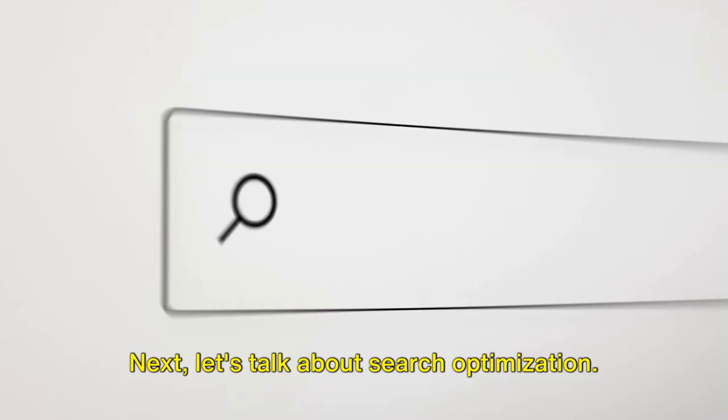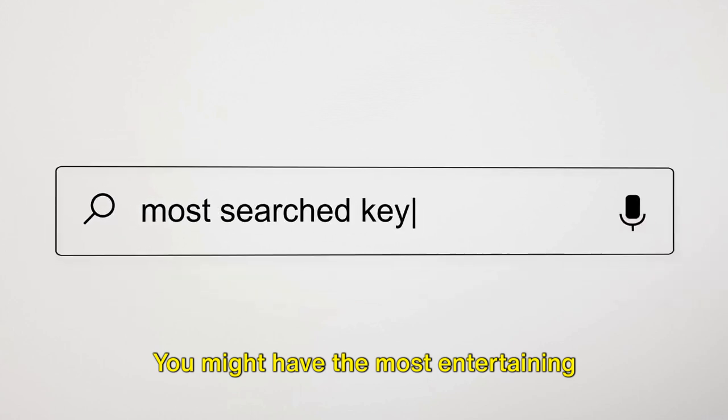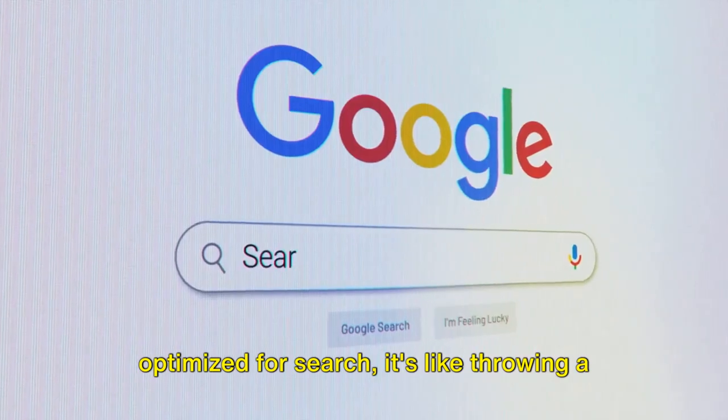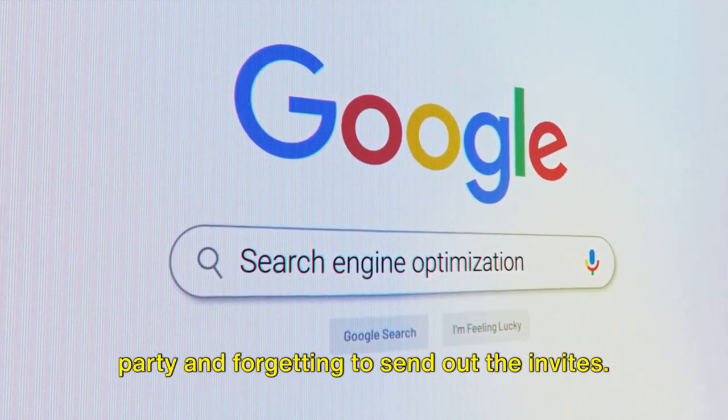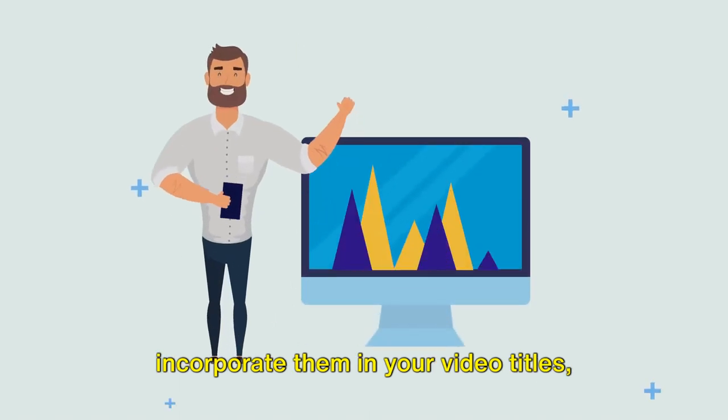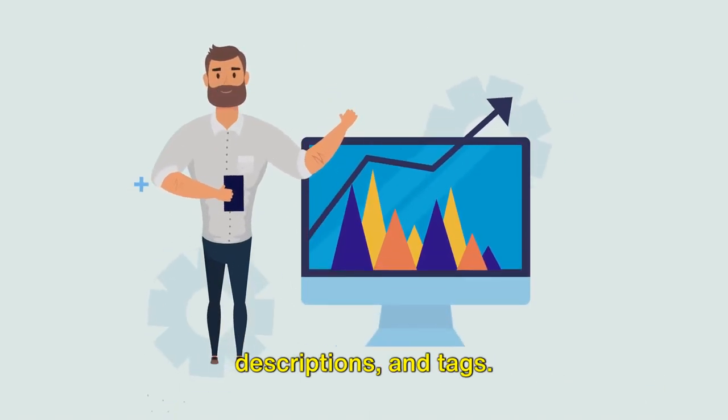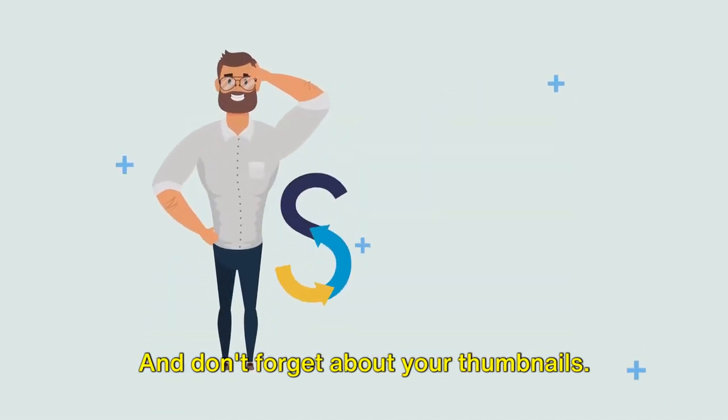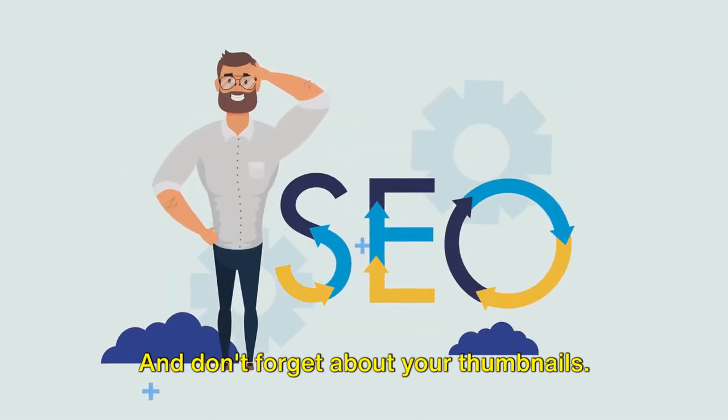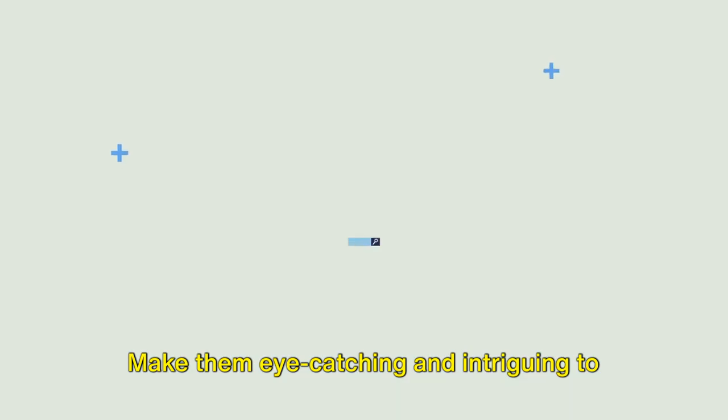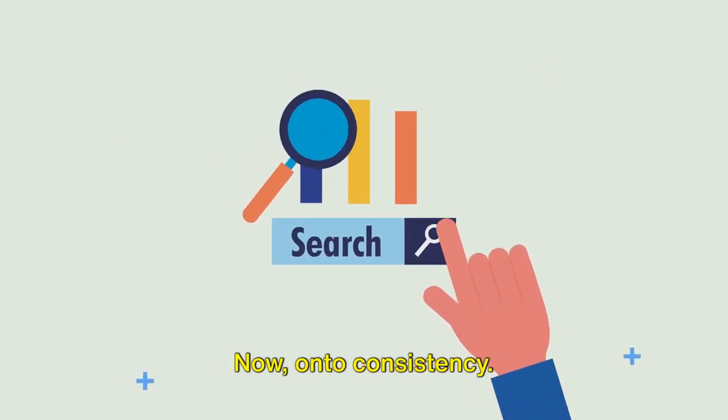Next, let's talk about search optimization. You might have the most entertaining video on the planet. But if it's not optimized for search, it's like throwing a party and forgetting to send out the invites. Do your homework. Research relevant keywords and incorporate them in your video titles, descriptions, and tags. This will help attract viewers and give your videos reach a significant boost. And don't forget about your thumbnails. They're like the book covers of the YouTube world. Make them eye-catching and intriguing to draw in potential viewers.